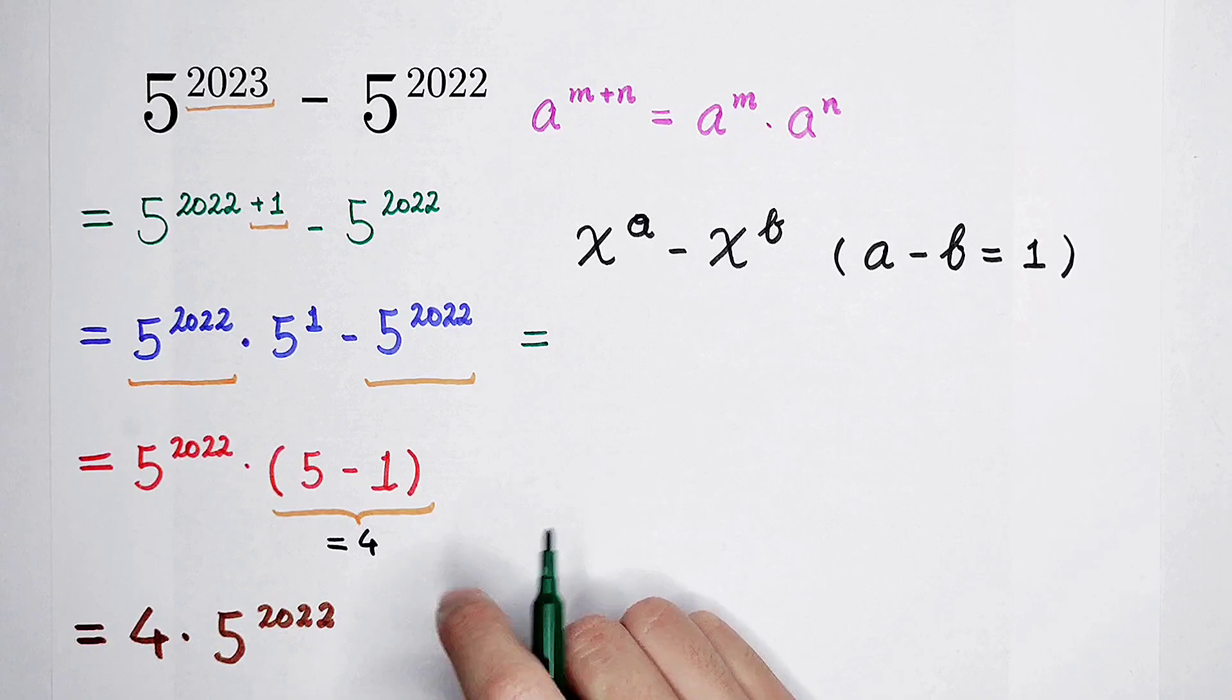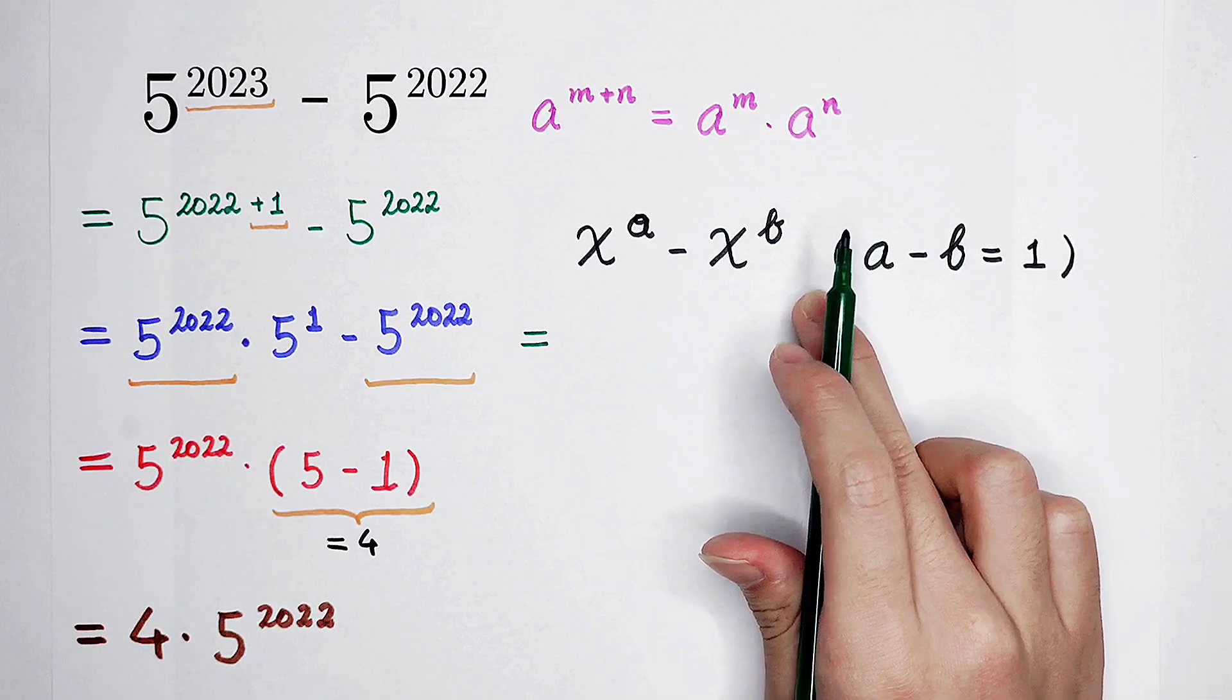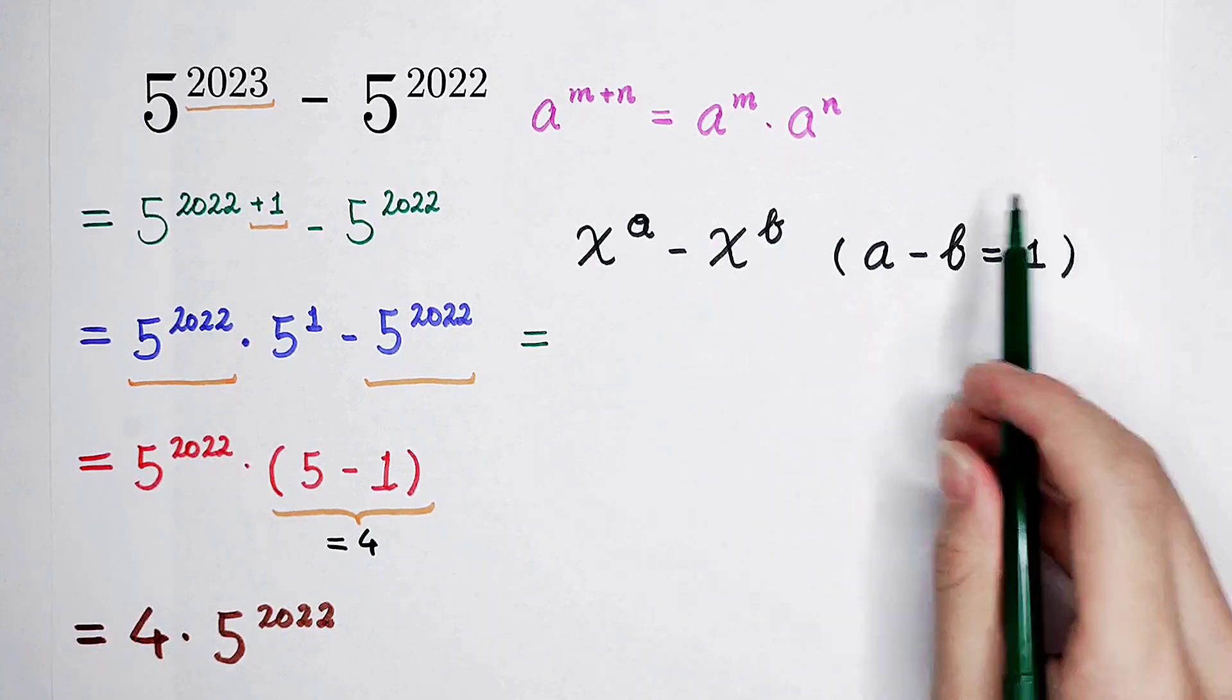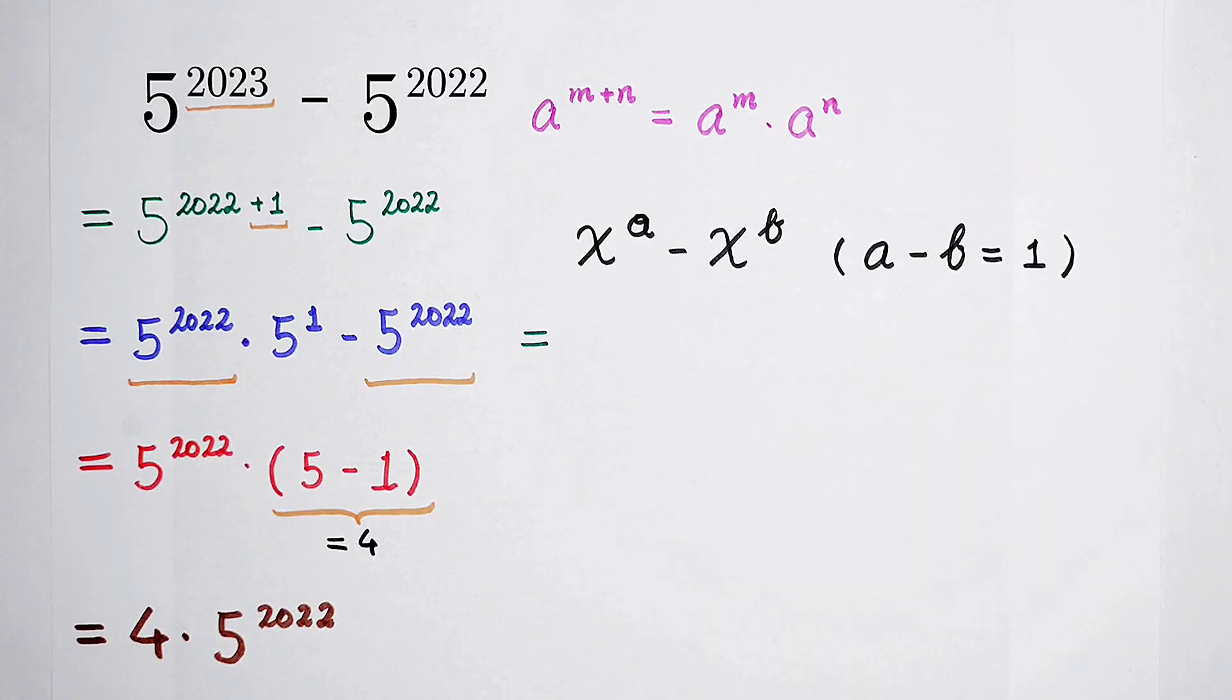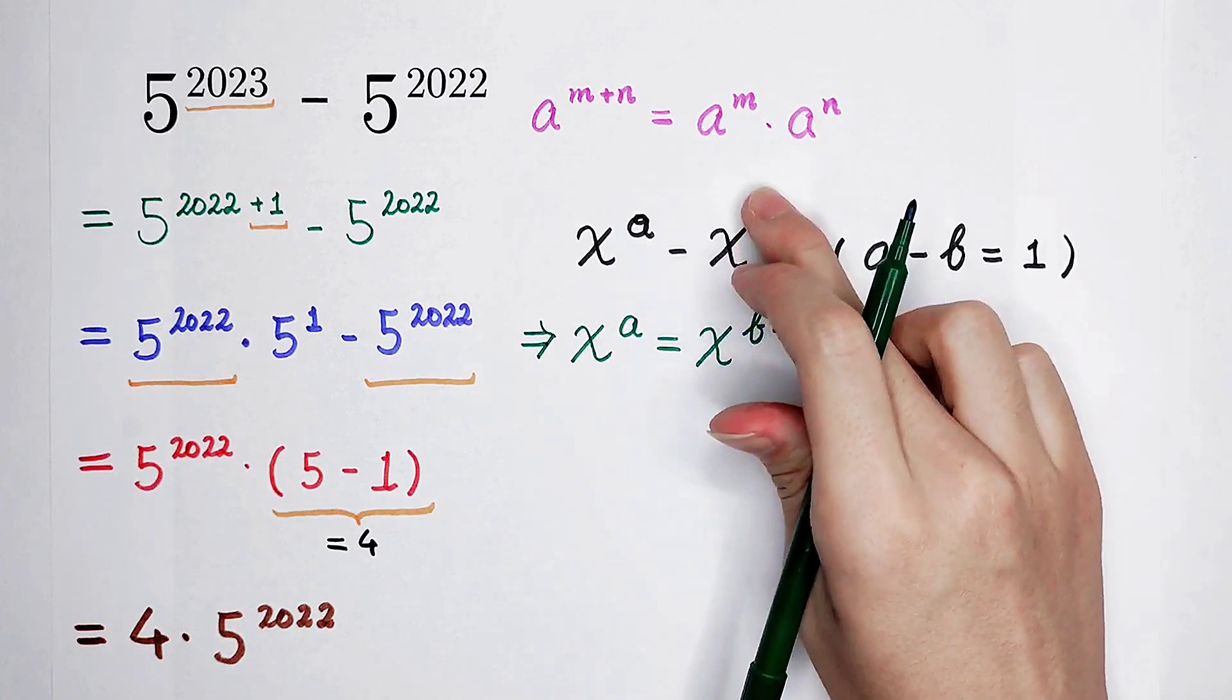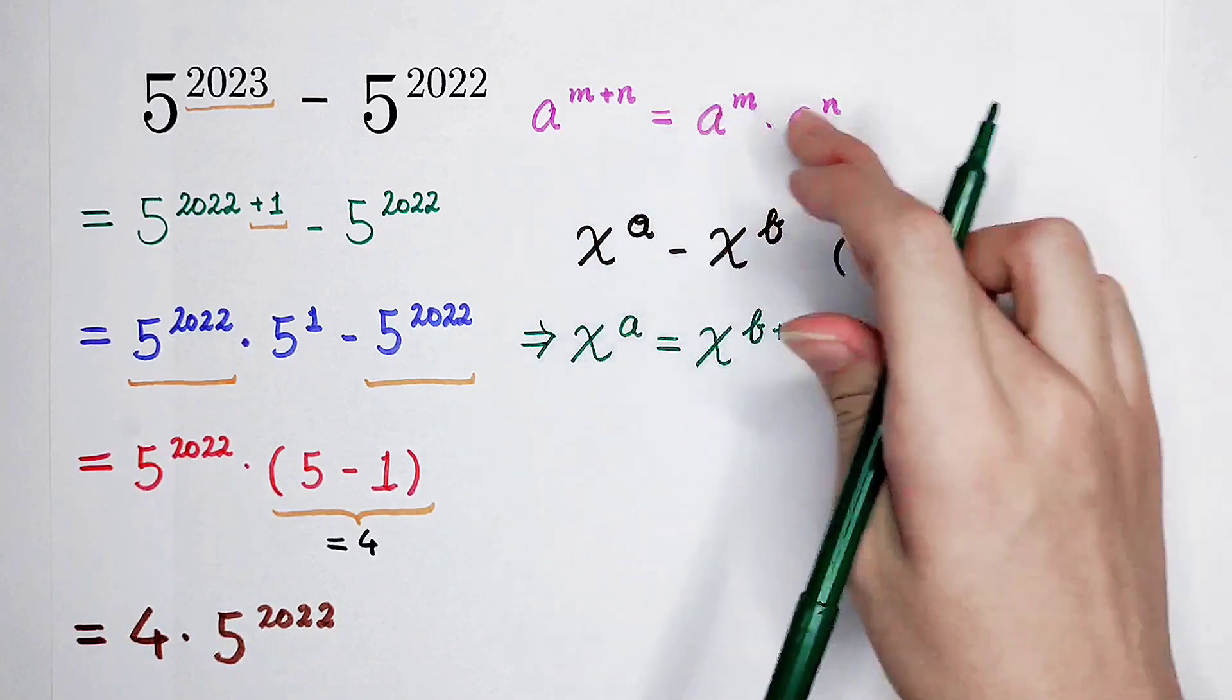Without the knowns, we can also solve this question successfully. Since a minus b is 1, so a is 1 plus b. By using this formula, a to the power of m plus n is equal to a to the power of m times a to the power of n.